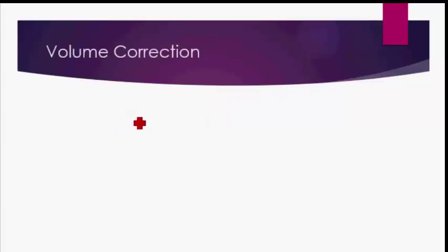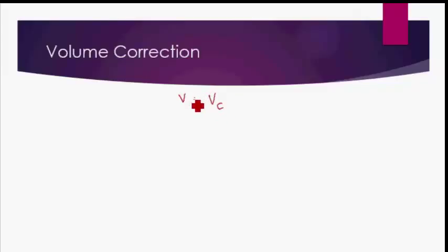Let's look at the volume correction first. In the ideal gas equation pV = nRT, the volume V is basically the volume of the container available for free movement to the molecules of the gas. For example, in your study room, the volume available for free movement is the volume of the room minus the volume of tables, chairs, cupboards, and shelves — because those regions in space are already occupied.